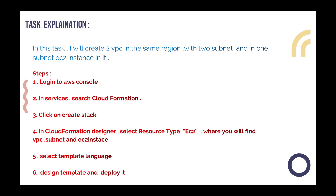First we log in to our AWS console, then search for CloudFormation in the services. You will see the CloudFormation console — click on 'Create Stack'. Then in the CloudFormation Designer tab, select the resource type EC2 where you will find VPC, subnet, and EC2 instances.